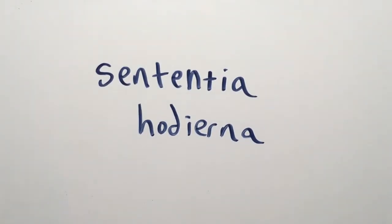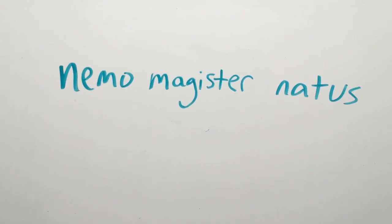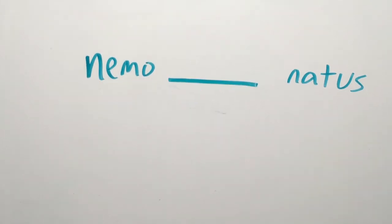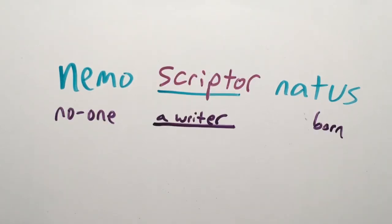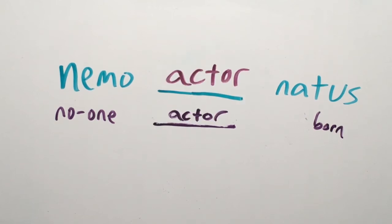Sententia hadierna est nemo magister natus, quid significat, no one is born a leader. Scribe sententiam tuum. Pro magister, scribe partem nominus primum. Exempli gratia: Nemo scriptor natus, no one is born a writer. Nemo actor natus, no one is born an actor.